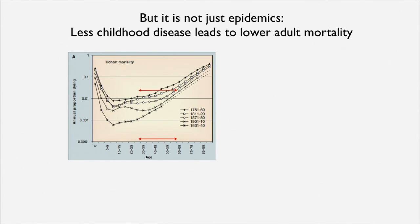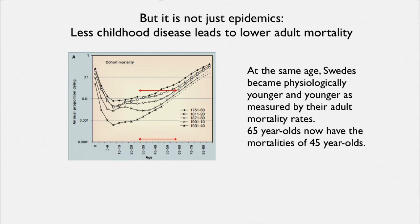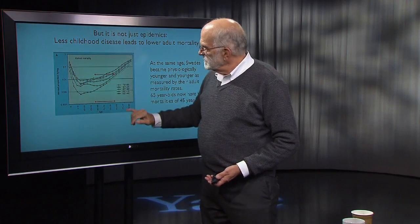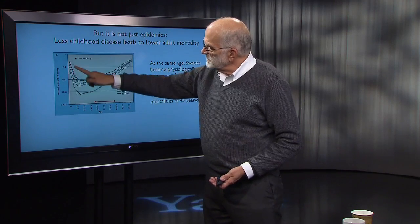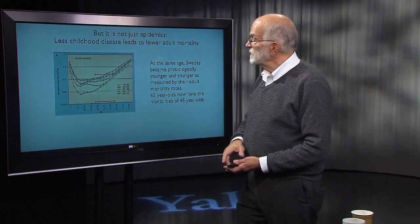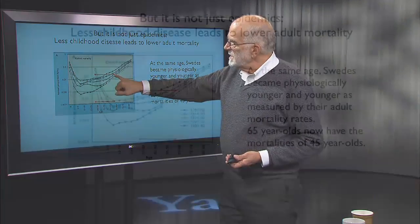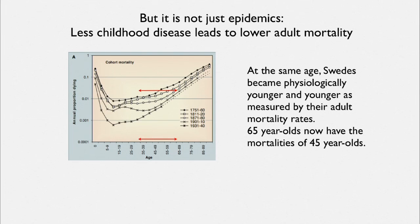It's not just epidemics that produce these kinds of responses, and death by an over-expression of inflammation is not the only possible outcome. When childhood disease goes down, there is also lower adult mortality. At the same age, Swedes became physiologically younger. You can see the annual proportion of people dying dropping as we go from 1751 up to 1931. Basically, a 65-year-old Swede in 1930 had the ability to resist infection that a 45-year-old Swede would have had about 200 years earlier.